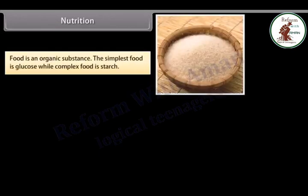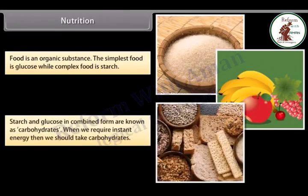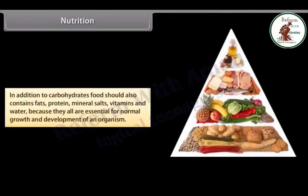Food is an organic substance. The simplest food is glucose, while complex food is starch. Starch and glucose in combined form are known as carbohydrates. When we require instant energy, we should take carbohydrates. In addition to carbohydrates, food should also contain fats, protein, mineral salts, vitamins, and water, because they are all essential for normal growth and development of an organism.